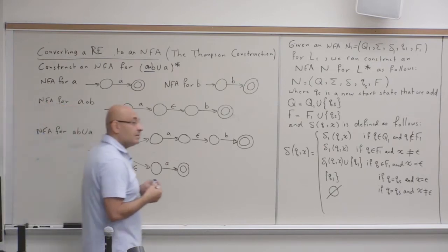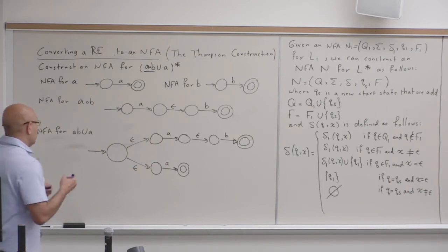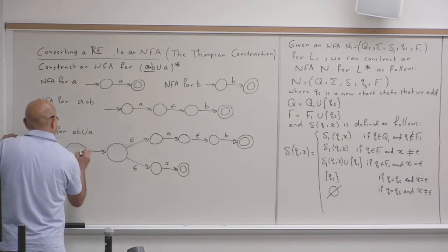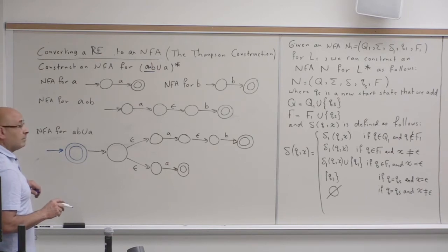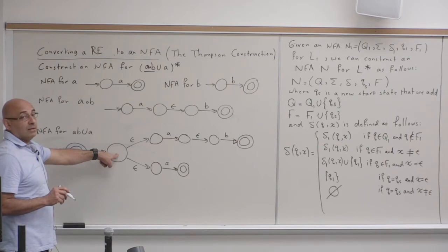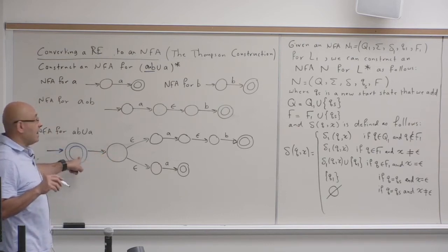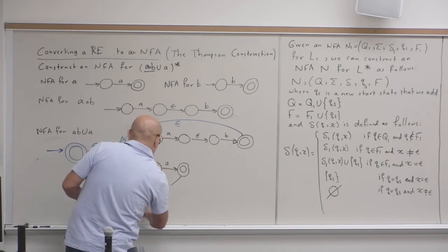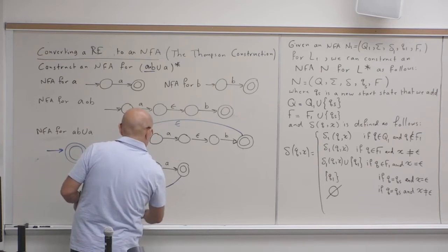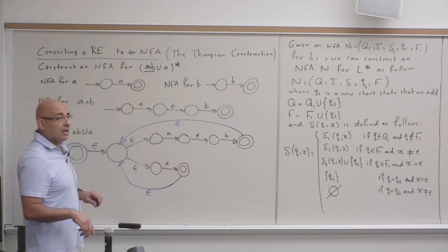Now the last operation is star. To construct an NFA for the star, we add a new start state which is also an accept state. Then we add epsilon transitions from every accept state back to the original start state — not to the new start state we just added, but to the original. So the epsilon transitions loop back to the original start state, allowing repetition.